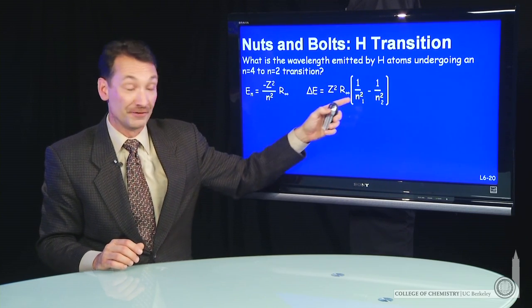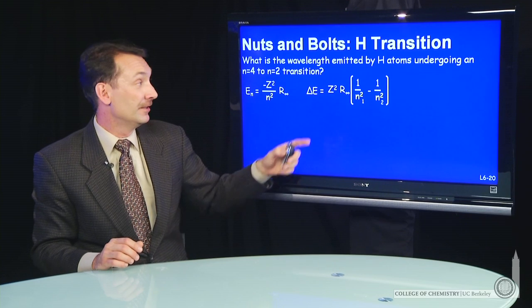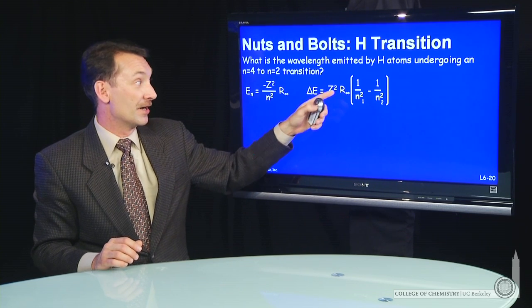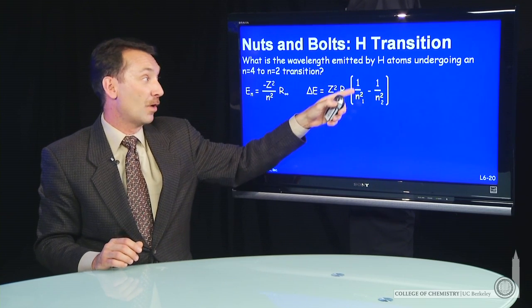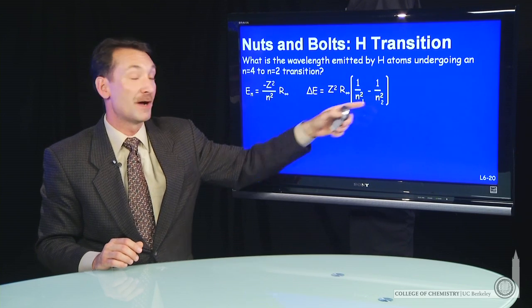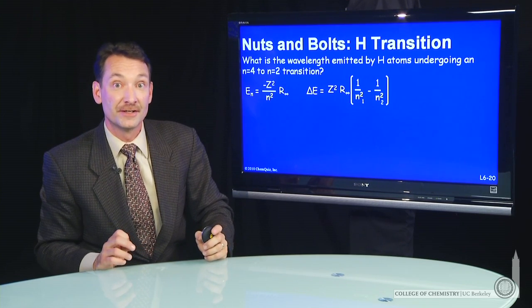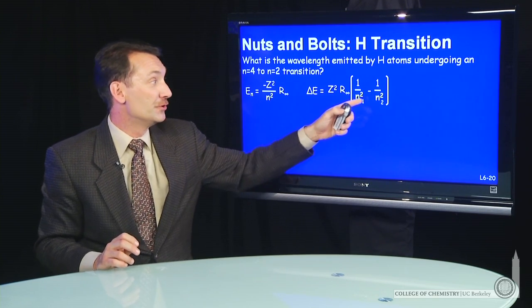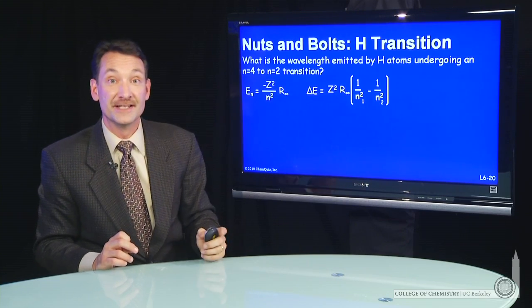If we're going to change energy levels, then the change in energy is z squared R infinity, 1 over the final transition minus the first transition value, so 2 and 4 in this case.